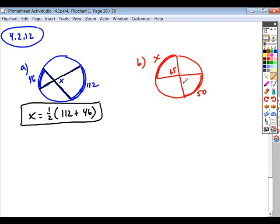So it's the same relationship that exists. The angle whose vertex is inside of a circle, so this one has a given angle measure of 65 degrees, is equal to one-half the sum of the intercepted arcs. So X plus 50.